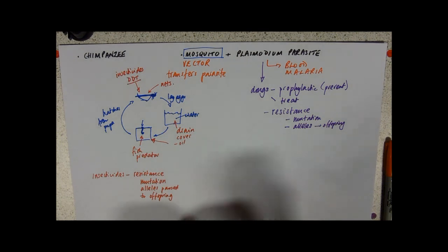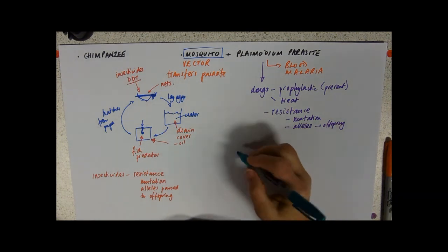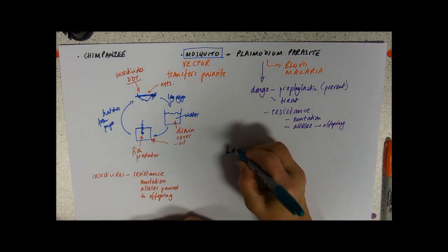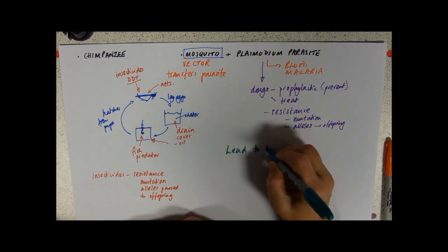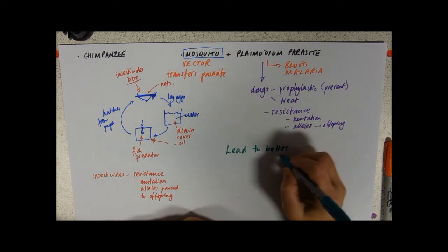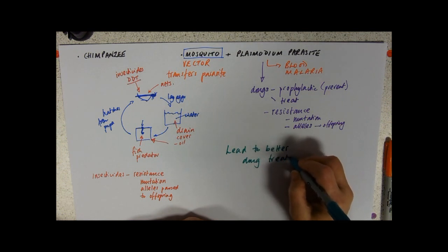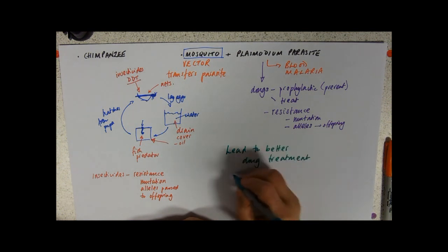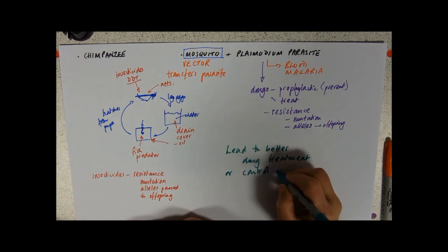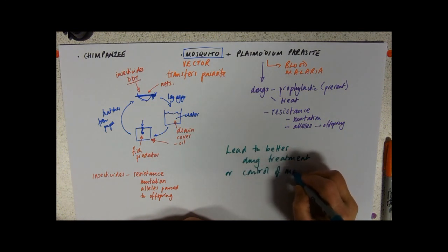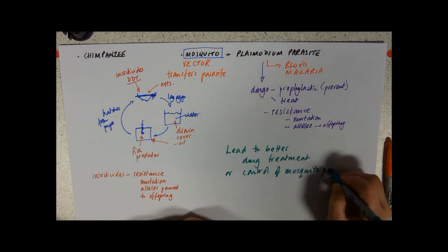So the whole aim of mapping the genome of these two organisms is to then try to exploit their genome to make them more vulnerable to drugs. So what they're hoping for is that this will lead to better drug treatment or control of mosquito populations.